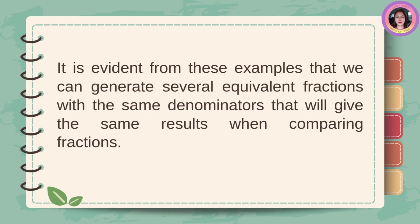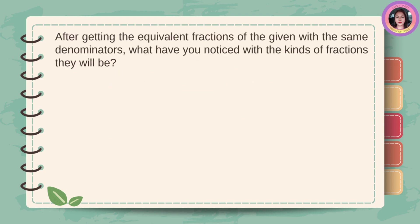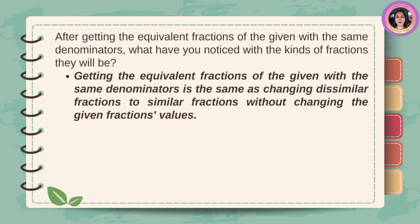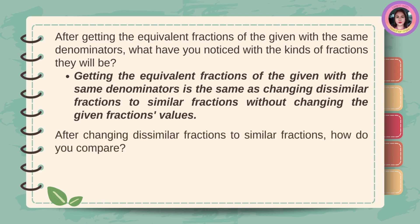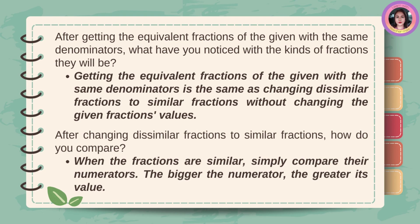It is evident from these examples that we can generate several equivalent fractions with the same denominators that will give the same results when comparing fractions. After getting the equivalent fractions with the same denominators, what have you noticed with the kinds of fractions they will be? Getting equivalent fractions with the same denominators is the same as changing similar fractions to similar fractions without changing their values. After changing the similar fractions to similar fractions, how do you compare? When the fractions are similar, simply compare their numerators — the bigger the numerator, the greater its value.